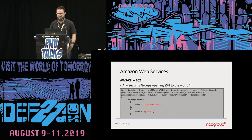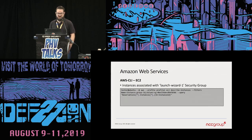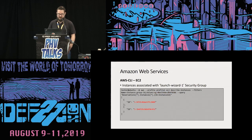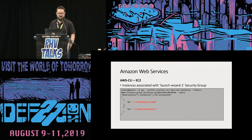We'll focus on launch-wizard-1, grab its security group ID, and use it in our next query. We're looking for SSH exposed to the internet — this query looks for port range 22 to 22 for CIDR block 0.0.0.0/0. We see launch-wizard-1 again and also an open-SSH group. Open SSH is probably okay, but we want to verify it's not supposed to be restricted to only developers. We check what instances are associated with that security group — there are actually two instances with SSH potentially exposed to the internet.